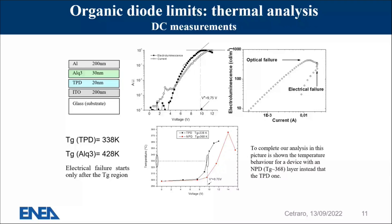When you go to high voltages and so high power, you will reach high temperatures. If you reach the glass transition, you will have electrical failure. But before that, some defects start to happen — especially on the border of the material — causing other effects. At lower voltages, and so at lower temperatures relative to the glass transition, you will have optical failure: the electroluminescence will fail even before the electrical failure, because it is related to the degradation of materials in the part that is in between the p-n junction.